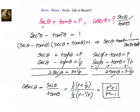We leveraged the identity secant squared theta minus tan squared theta equals 1, which gives secant theta minus tan theta equals 1 over p. When you add the two equations you get secant theta; when you subtract them you get tan theta. Dividing one by the other gives cosecant theta, which equals p squared plus 1 divided by p squared minus 1.